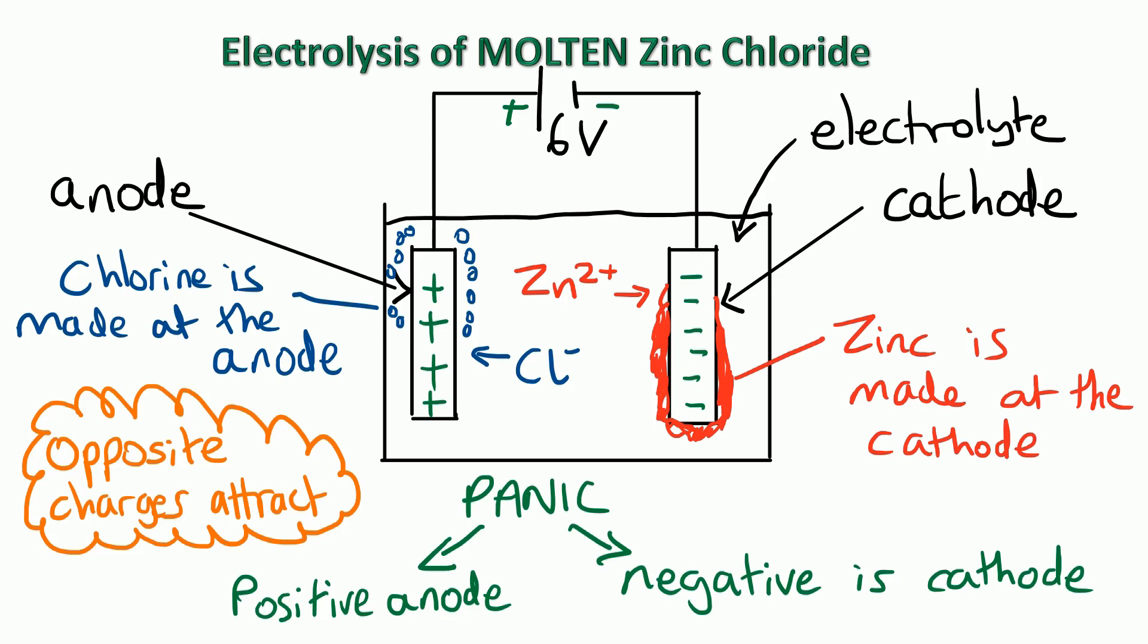Remember electrolysis is splitting up a compound using electricity. So we can see we've got zinc being made at the cathode and chlorine being made at the anode. So we've managed to split apart the zinc and the chlorine in zinc chloride.